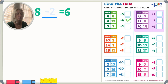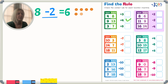Let's plug in the first one: 8 minus 2 equals 6. Let's draw this out: 1, 2, 3, 4, 5, 6, 7, 8. And then take away 2 — 1, 2 — and I'm left with 3, 4, 5, 6. I'm left with 6. So that is the correct answer.